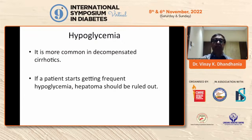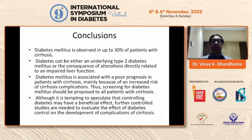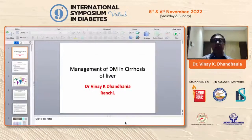Hypoglycemia is very common in decompensated cirrhotics, and if a patient starts getting frequent hypoglycemia, hepatocellular carcinoma should be ruled out. To conclude: diabetes mellitus is observed in up to 30% of patients with cirrhosis, and can be either underlying type 2 diabetes mellitus or consequence of impaired liver function. Diabetes mellitus is associated with poor prognosis in cirrhosis mainly due to increased risk of complications. Screening for diabetes should be proposed to all patients with cirrhosis, and further controlled studies are needed to evaluate the effects of diabetes control on development of cirrhosis complications. Thank you all for your patient listening.